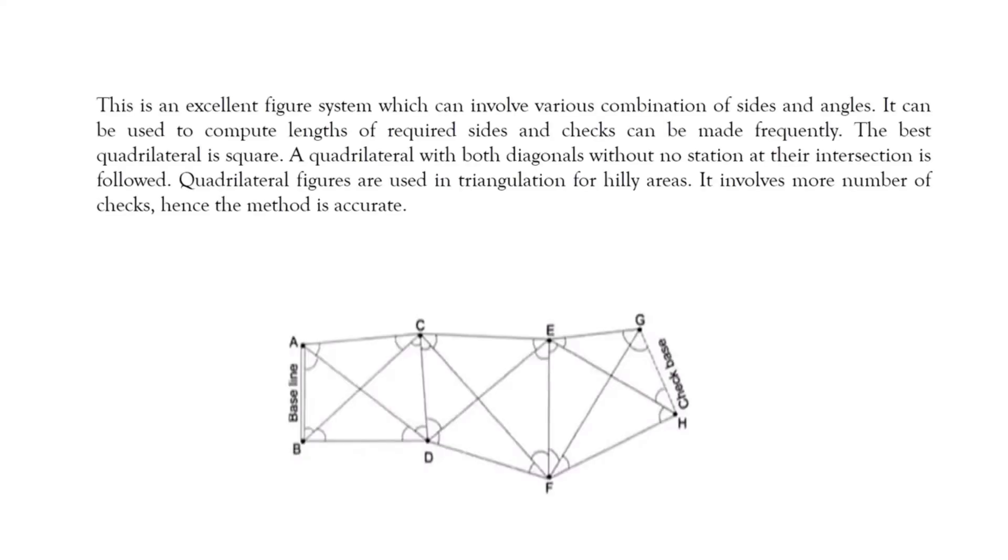2. Quadrilateral for triangulation. This is an excellent figure system that can involve various combinations of sides and angles. It can be used to compute lengths of required sides and checks can be made frequently. The best quadrilateral is square. A quadrilateral with both diagonals without a station at their intersection is followed. Quadrilateral figures are used in triangulation for hilly areas. It involves more checks. Hence the method is accurate.